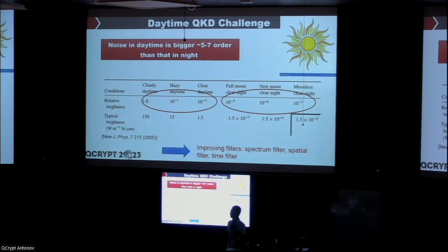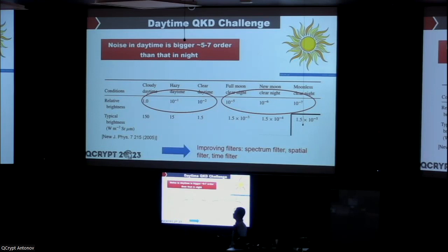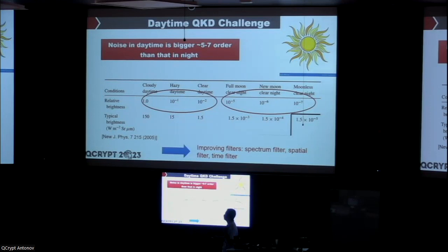For daytime satellite-to-ground QKD, we can only get positive final keys at night because in daytime there are a lot of photons from the sun — about five to seven or eight orders of magnitude more noise than the signal. So it is very difficult to realize satellite-to-ground QKD at long distance with low SNR, and we have to improve the spectral and spatial filters.